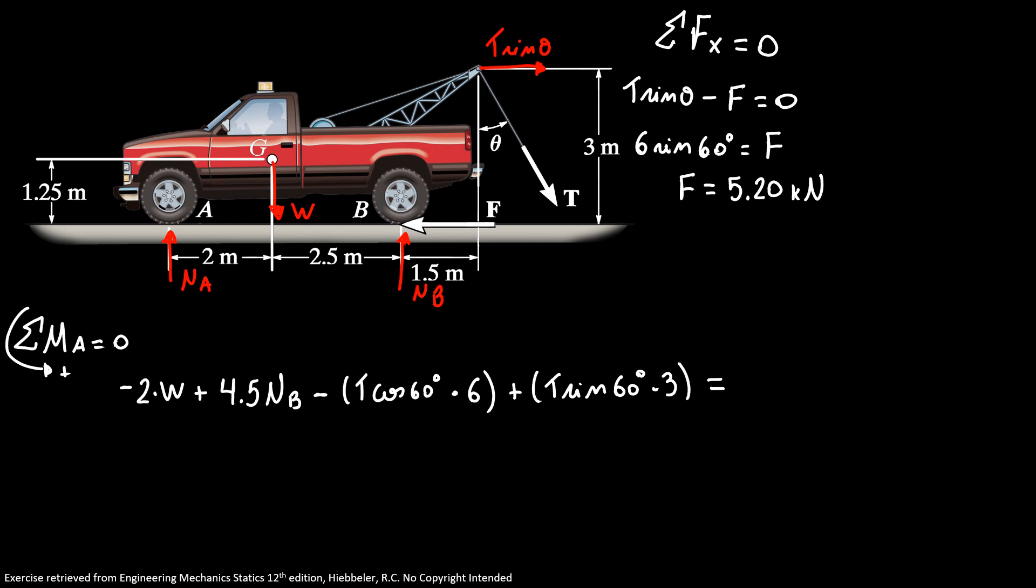So our weight is 4 times 10 to the third kilograms times 9.80. So our weight is equal 39.2 times 10 to the third Newtons. So our weight is equal 39.2 kN.